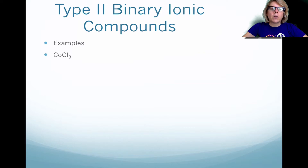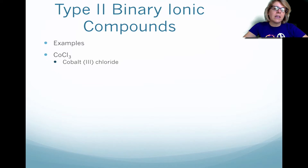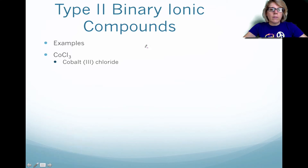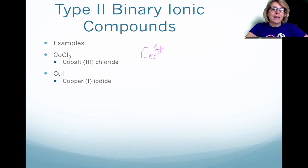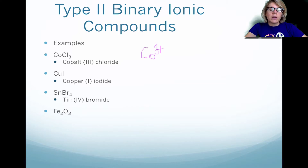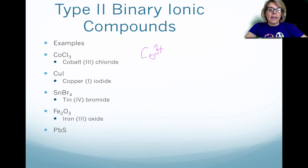Here are some examples. We have cobalt and chlorine, and it becomes cobalt(III) chloride. So the cation by itself would have cobalt with a 3-plus charge. Here we have copper and iodine, and together they form copper(I) iodide. Tin with bromine forms tin(IV) bromide. Iron with oxygen forms iron(III) oxide, and lastly lead with sulfur forms lead(II) sulfide.